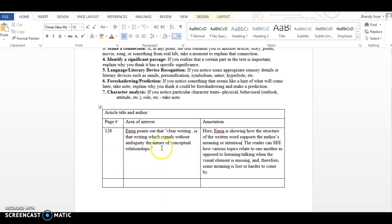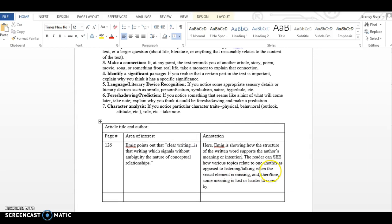Here I just point out page 126 - you're going to use the PDF page when available. Emig points out that 'clear writing...is that writing which signals without ambiguity the nature of conceptual relationships.' I'm making sure I put quotes around her actual words, and any words I leave out I use the ellipses. Then I'm just going to make my comment on it. So this is really what an annotation is.